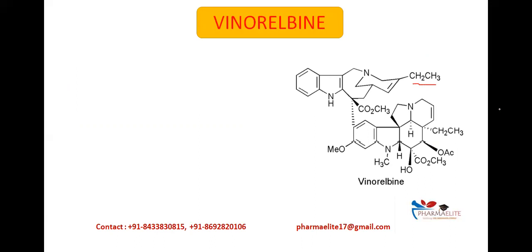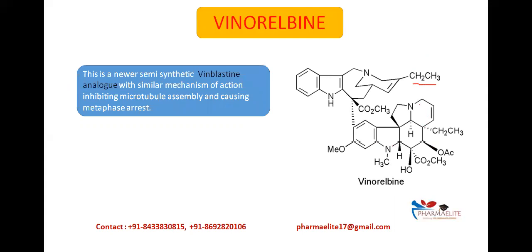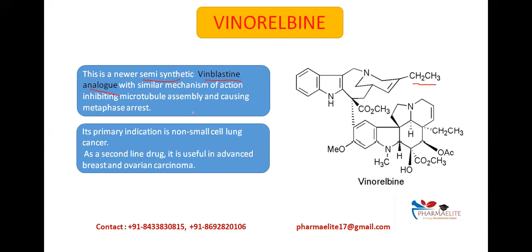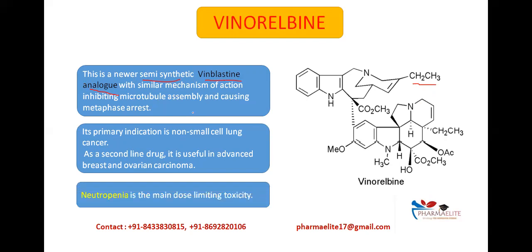Vinorelbine also has an indole ring, a dihydroindole ring, and a quinoline moiety. It is a new semi-synthetic derivative of Vinblastine, making it a Vinblastine analog. Its mechanism of action is similar — it inhibits microtubule assembly and causes metaphase arrest. The main indication is non-small cell lung cancer; it can also be used as a second-line drug and is useful in advanced breast cancer and ovarian carcinoma. The main toxicity of Vinorelbine is neutropenia. In summary: Vincristine causes peripheral neuropathy, Vinblastine causes bone marrow depression, and Vinorelbine causes neutropenia.